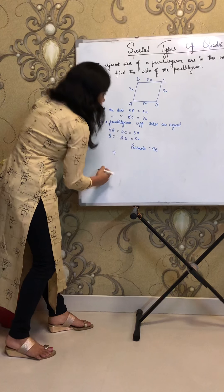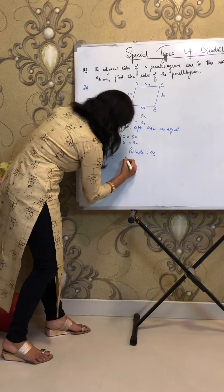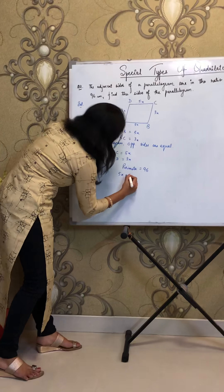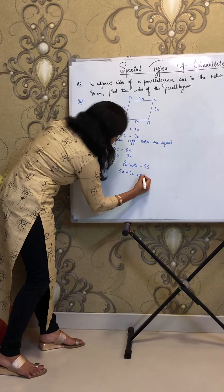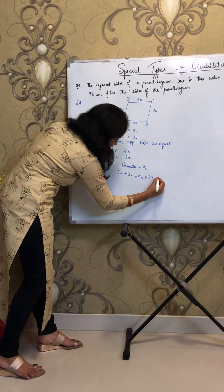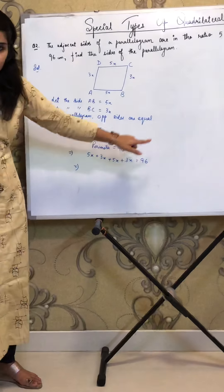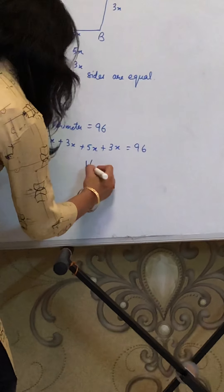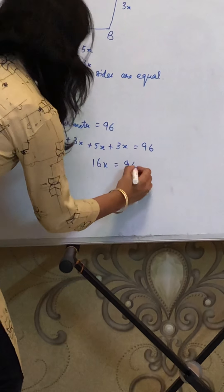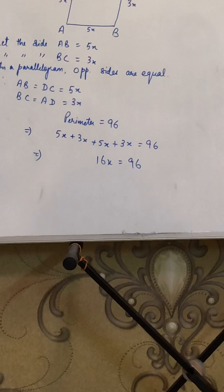So perimeter is what? Sum of all the sides. Can I write 5X plus 3X plus 5X plus 3X? Yes, I can do that. Now if you add these four, you will get 16X equals to 96.